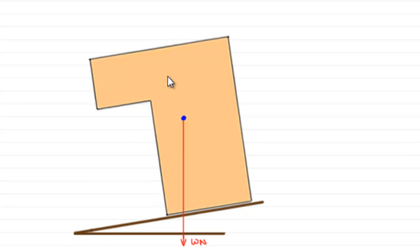To demonstrate this, I've got a lamina here resting on an inclined plane. I've marked in the centre of mass here and you can see the weight W Newtons acts through this point vertically.